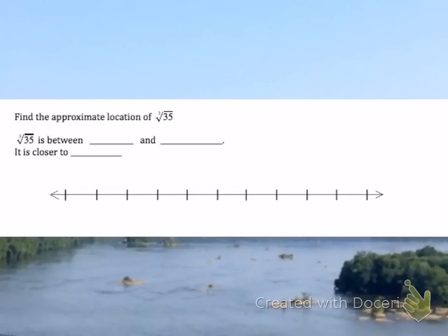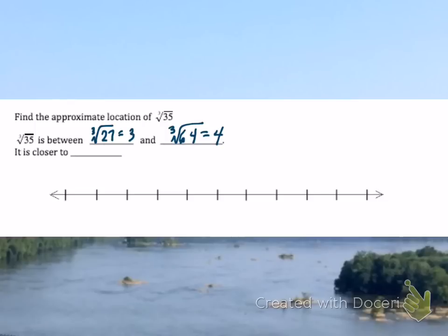To find the cube root of 35, think of the perfect cubes below and above 35. 27 is a perfect cube below 35, and the cube root of 27 is 3. 64 is the perfect cube above 35, and the cube root of 64 is 4. So the cube root of 35 is between 3 and 4. Is 35 closer to 27 or closer to 64? Since 35 is closer to 27, the cube root of 35 is closer to 3. I put my dot closer to 3 — it's just an estimation — and then label it.